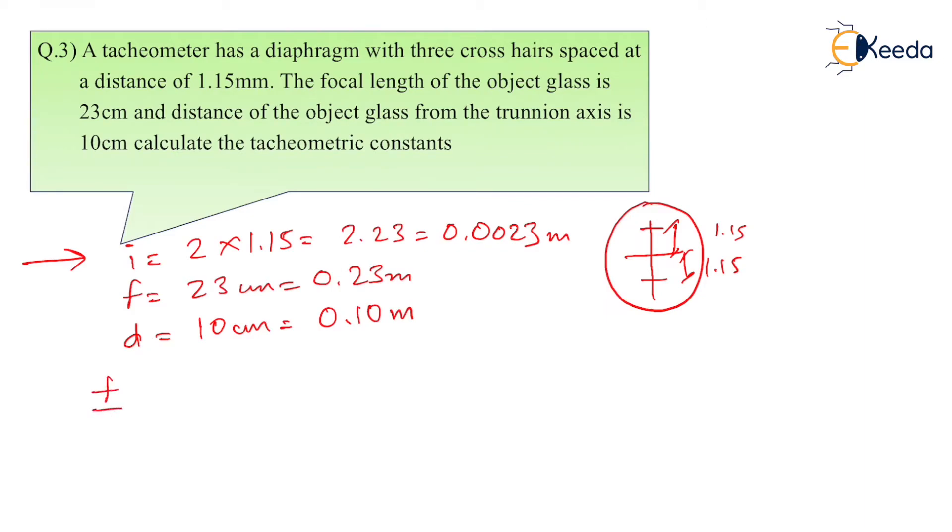As we know, we have 2 constants. One is multiplying constant, that is F upon I. That can be calculated by putting the values of F and I, and that is equal to 100.